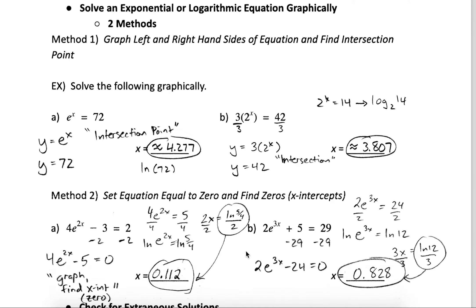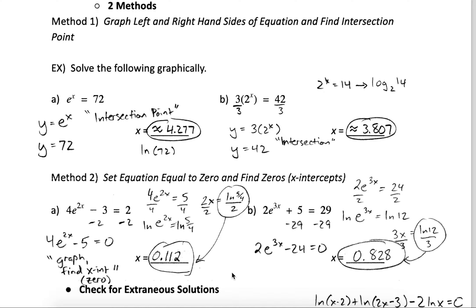A lot of times we can use algebraic methods, but sometimes you forget the algebraic method or have an equation that's too hard. In that case, we can always use a graphing method to solve equations — this is true for any type of function, not just logs and exponentials. We can graph just the left side and just the right side of the equation, then look graphically for where those two graphs intersect. You can use a graphing calculator to find intersection points.